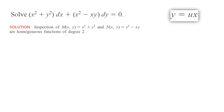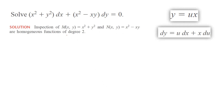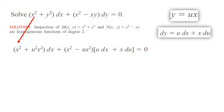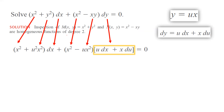So we're going to use substitution u equals y over x, or y equals ux. Taking the differential of both sides, dy equals u dx plus x du. In the next step, we're going to do the substitution — wherever we see y, we're going to use ux. So x squared stays the same, plus y squared becomes u squared x squared, dx stays the same, plus x squared minus ux, which becomes ux squared, and dy is u dx plus x du.